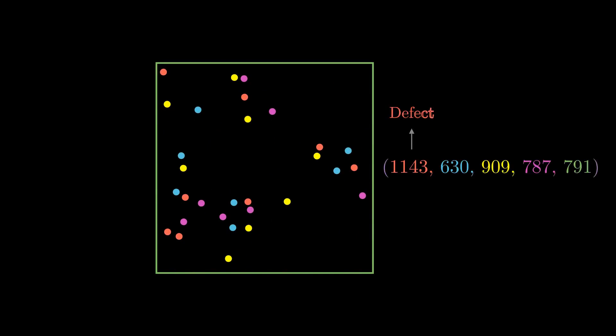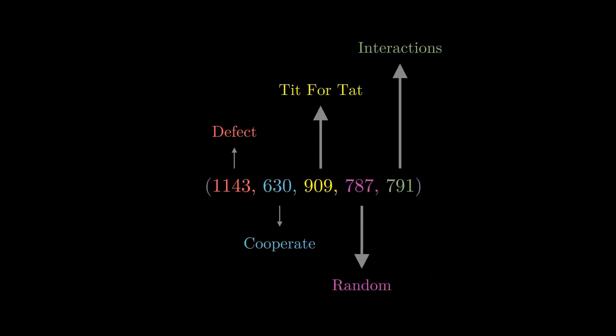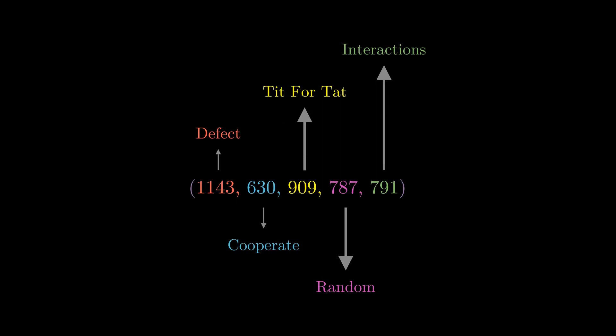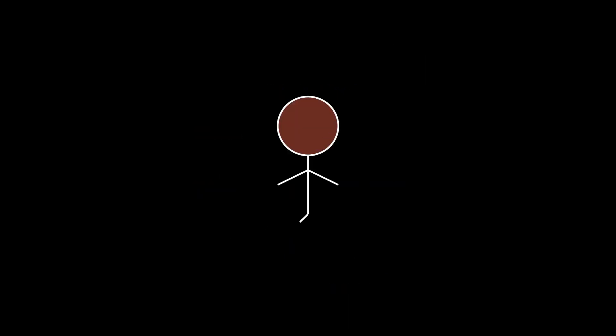And the results are exactly as expected: always defect and tit for tat strategy do have the first to highest points. So now is always defect the dominant strategy again? Concluding so hastily takes away all the fun. In truth, our strategy being a dominant strategy is entirely dependent upon the environment it's interacting with.